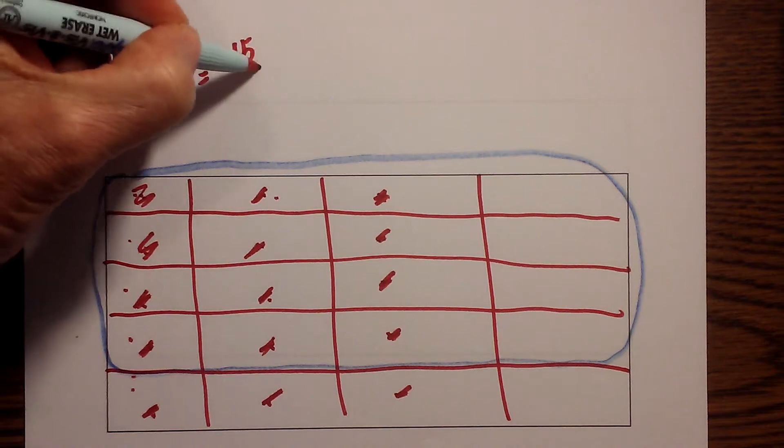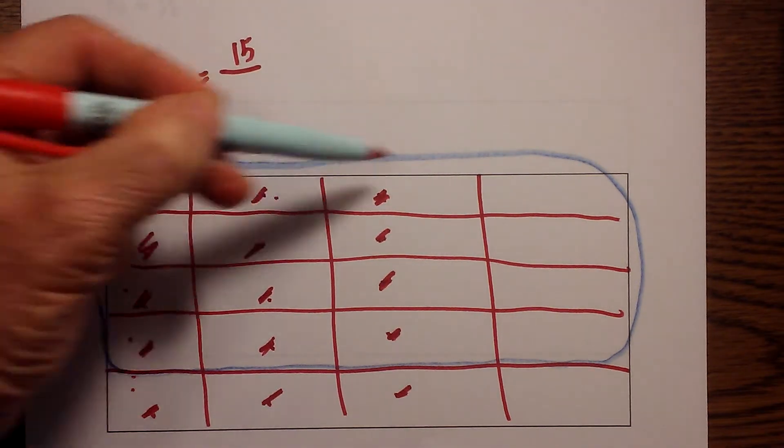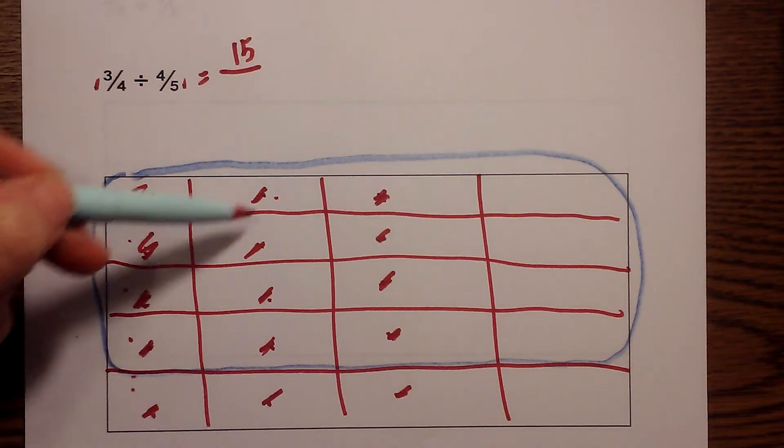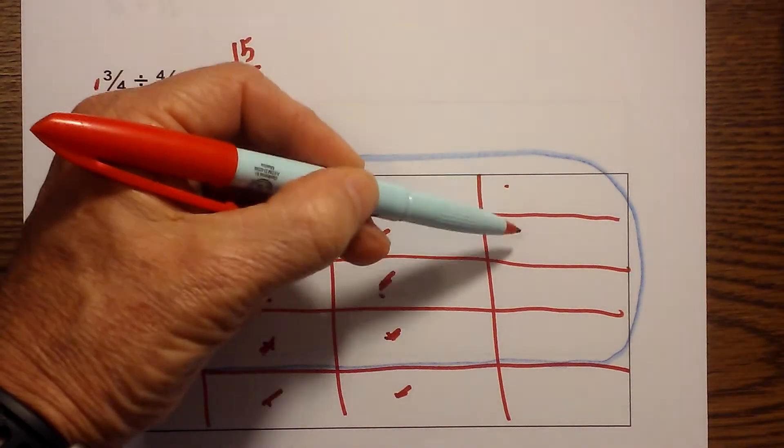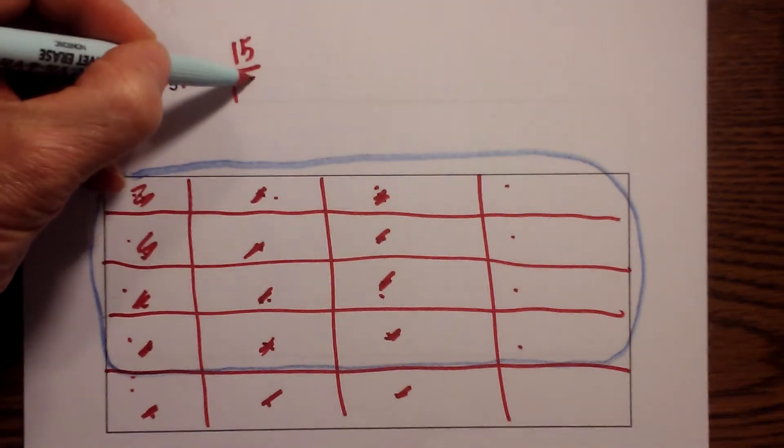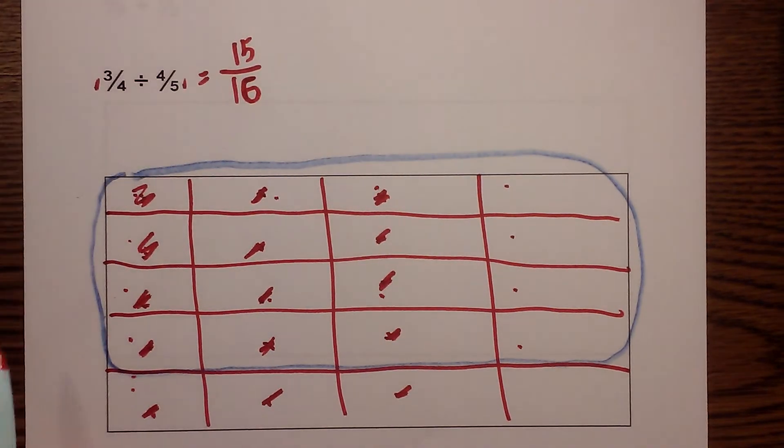So it will be 15 over and count how many that I have circled. 1, 2, 3, 4, 5, 6, 7, 8, 9, 10, 11, 12, 13, 14, 15, 16. And I know that 15/16 is in its lowest form.